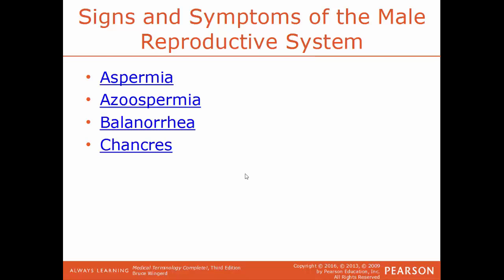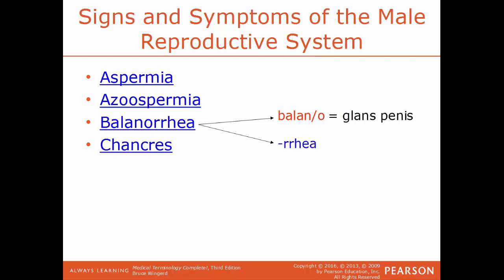Related to that is azoospermia. In this condition, there's an absence of living sperm cells within semen — you have a fluid being ejaculated, but there are no sperm cells in it. Balanorrhea: balano is a reference to the glans penis, and urea is a discharge — so this is a discharge from the head of the penis. Chancre is a type of painless ulcer, usually one that develops on the genitals, commonly found with sexually transmitted infections like syphilis.